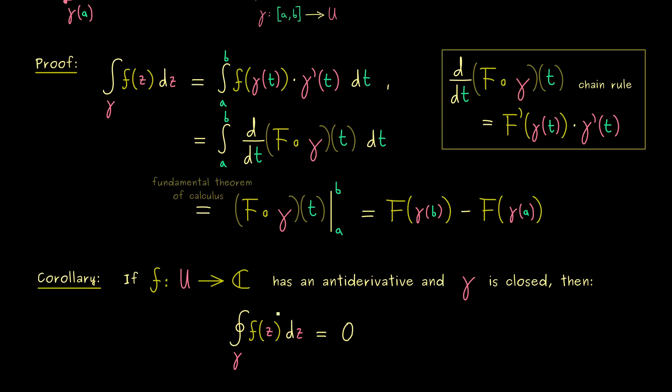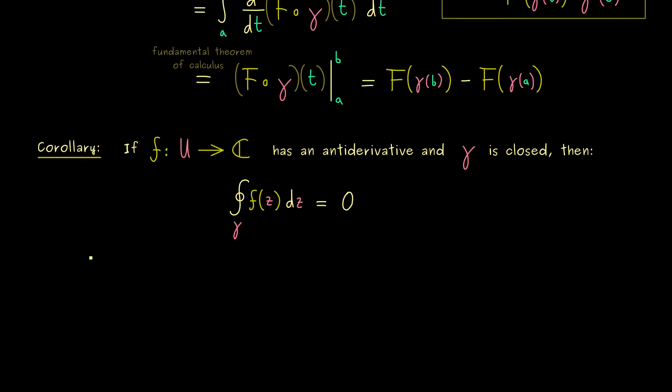Okay then I would say let's look at some examples now. So let's start with one where we have an anti-derivative. So the domain U should be given as the complex plane without the origin. Because then we can look at the function f given by 1 divided by z squared. And there of course we know we have an anti-derivative capital F. Namely this one will be minus 1 divided by z.